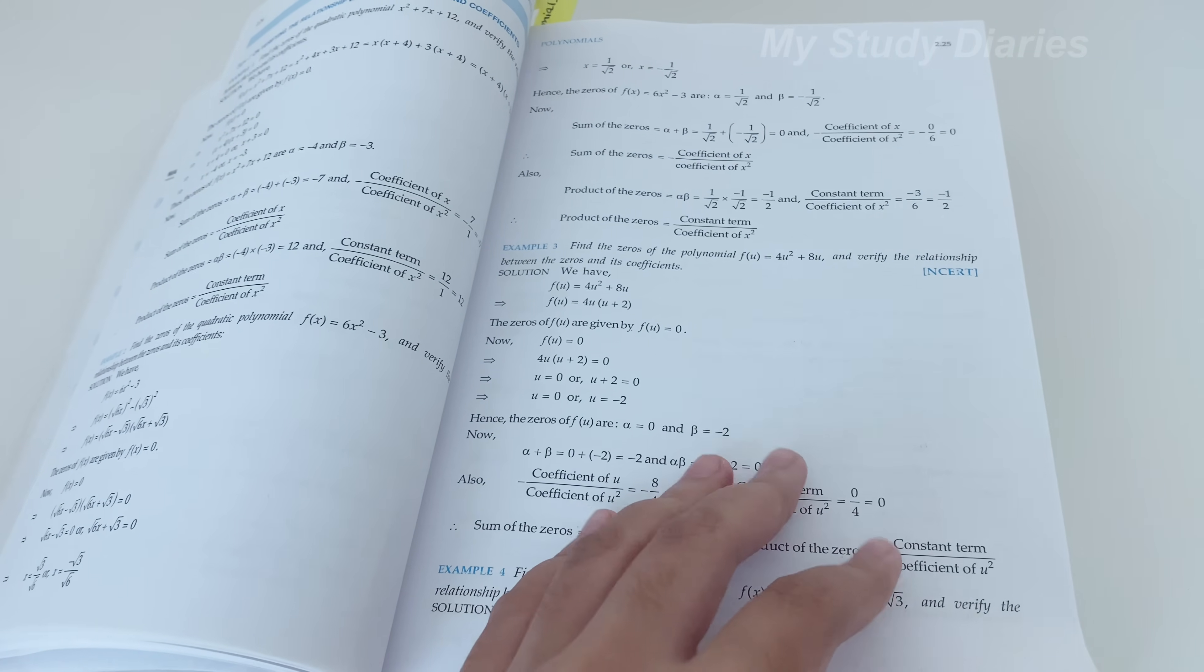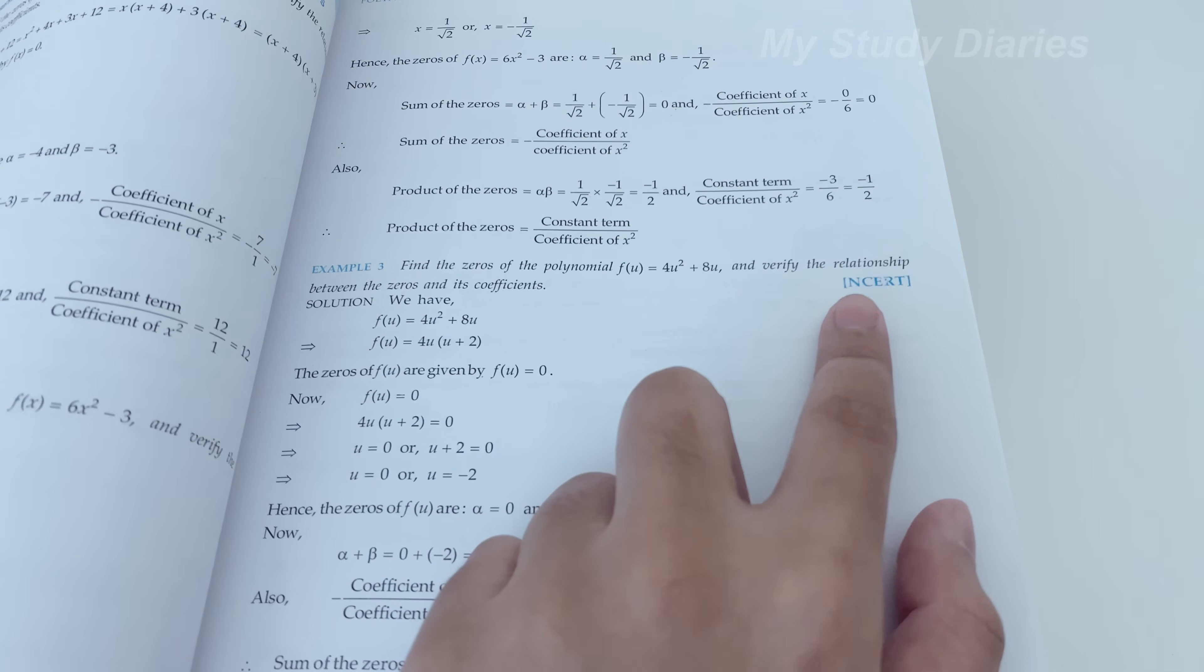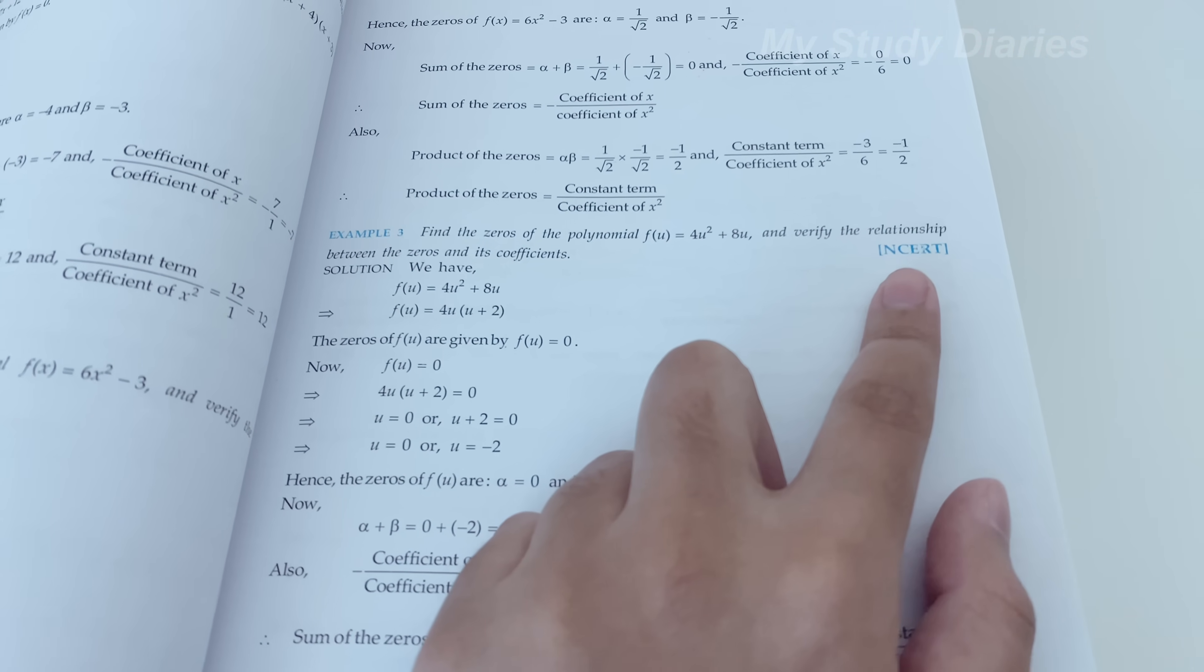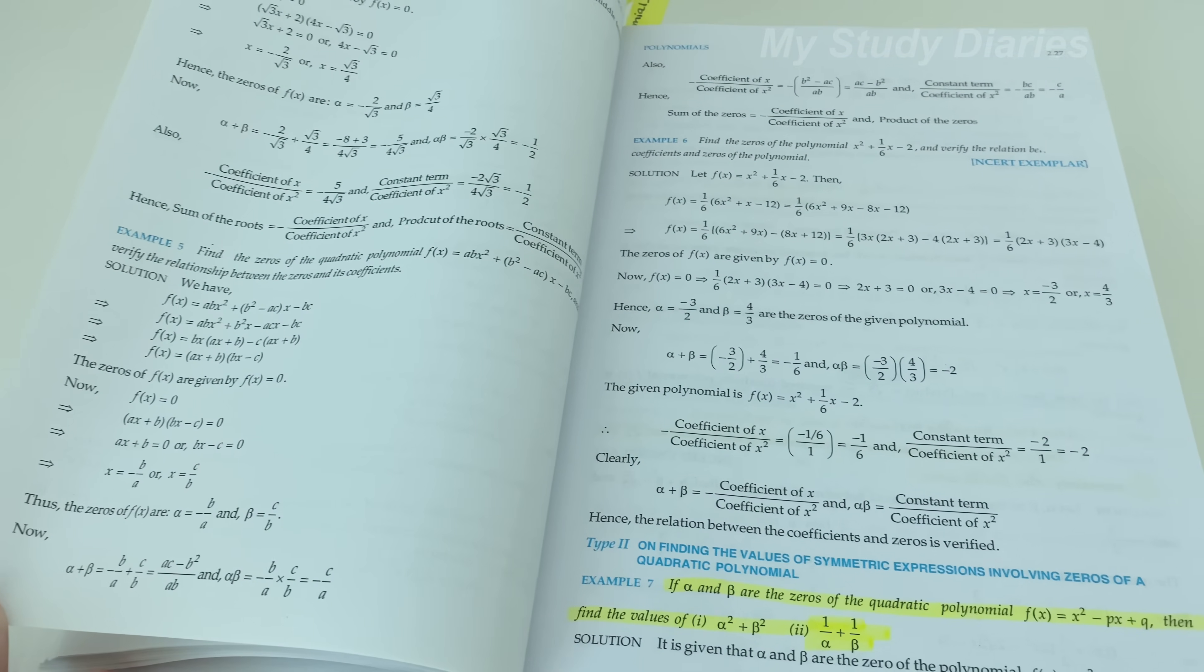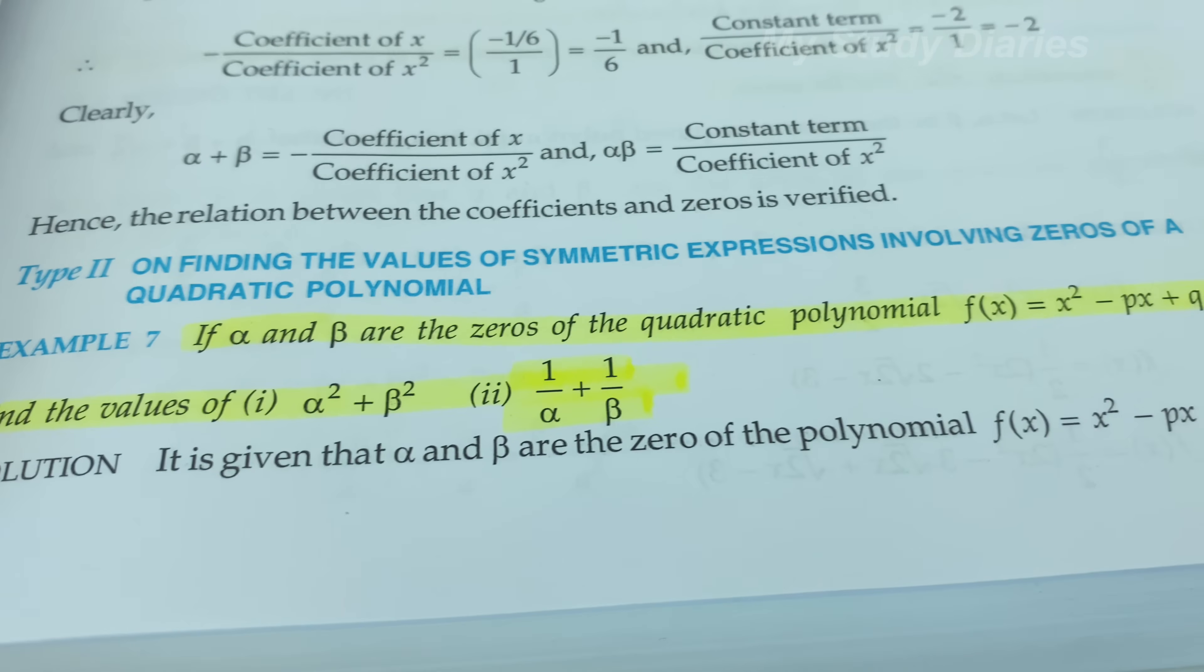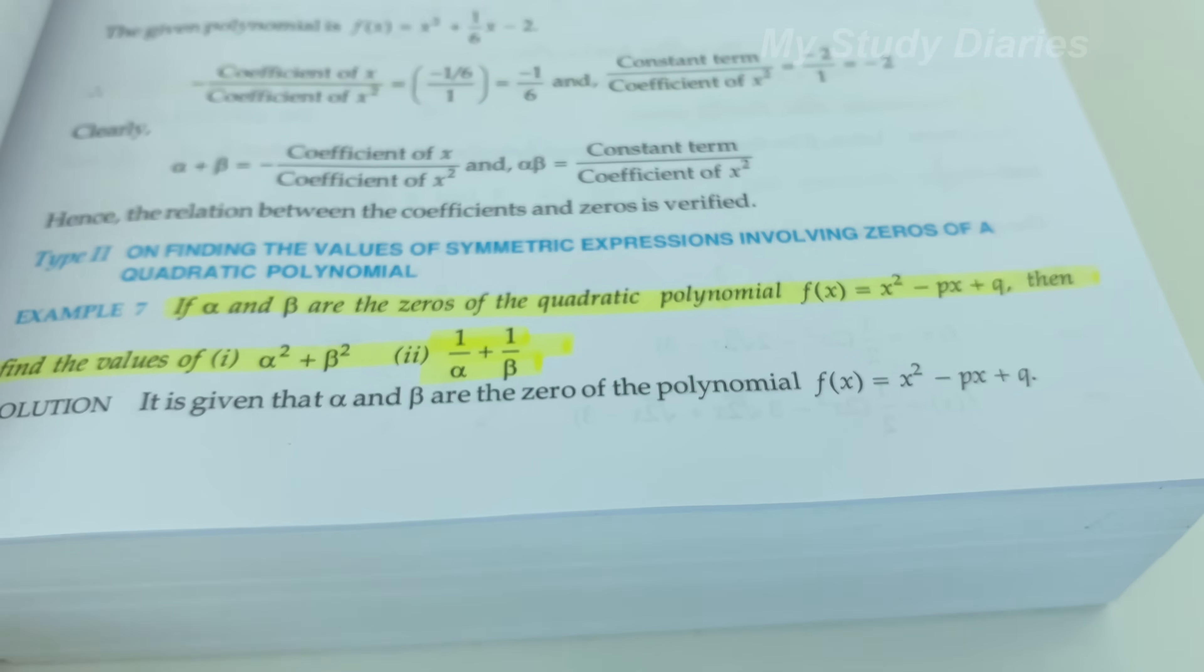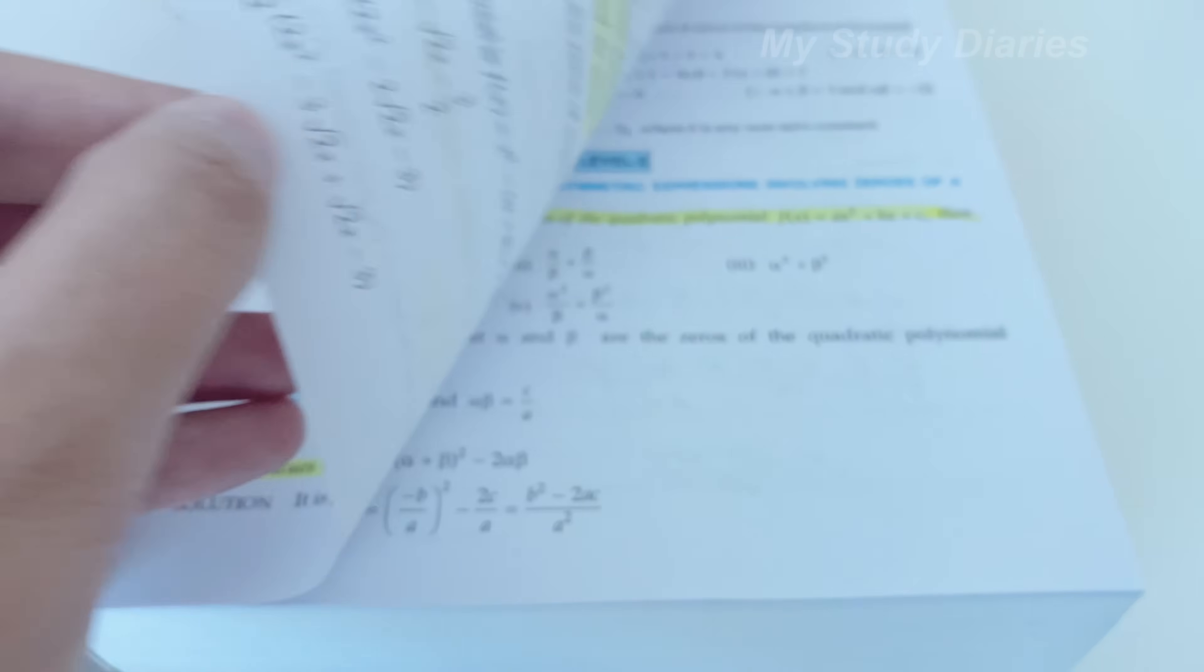Coming back to R.D. Sharma and what I use it for. So as you can see, many questions and examples are from NCERT. So again, there's no point of redoing those questions. So don't do it again and again. Look for questions which are unique, different, which you haven't come across in NCERT. That is why I always say, first do the NCERT textbook and then do any other external source.